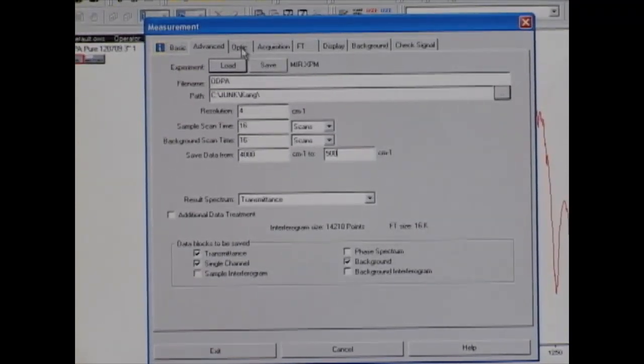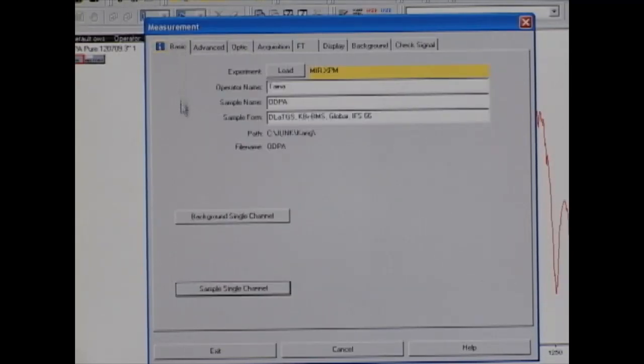After that, we move back to the Basics tab. In the Basics tab, the first thing we're going to do before we load our sample is to run a background scan of the salt plates that we are going to use.